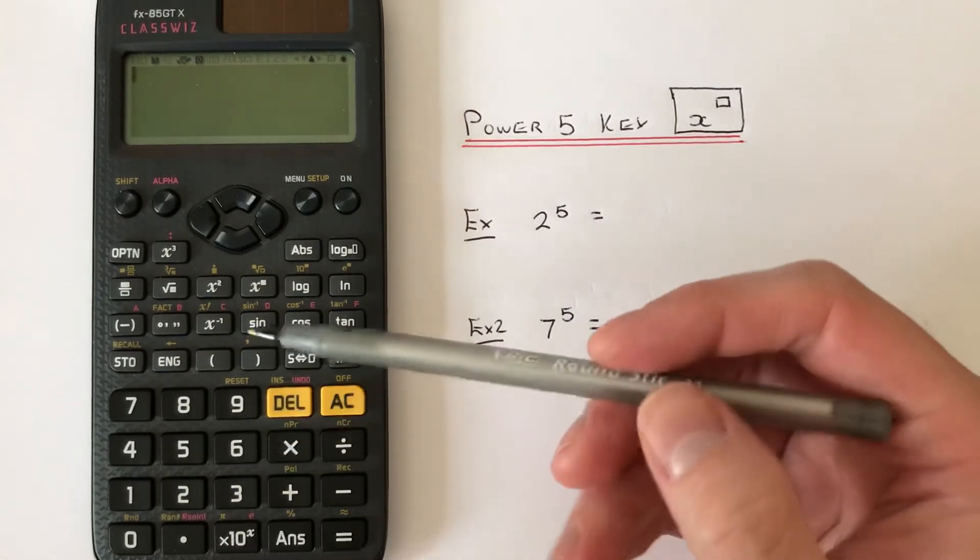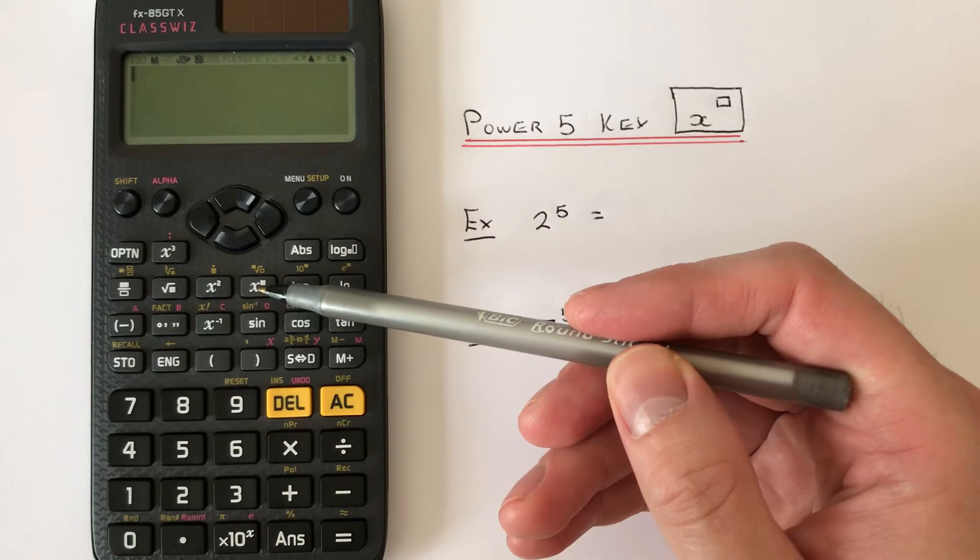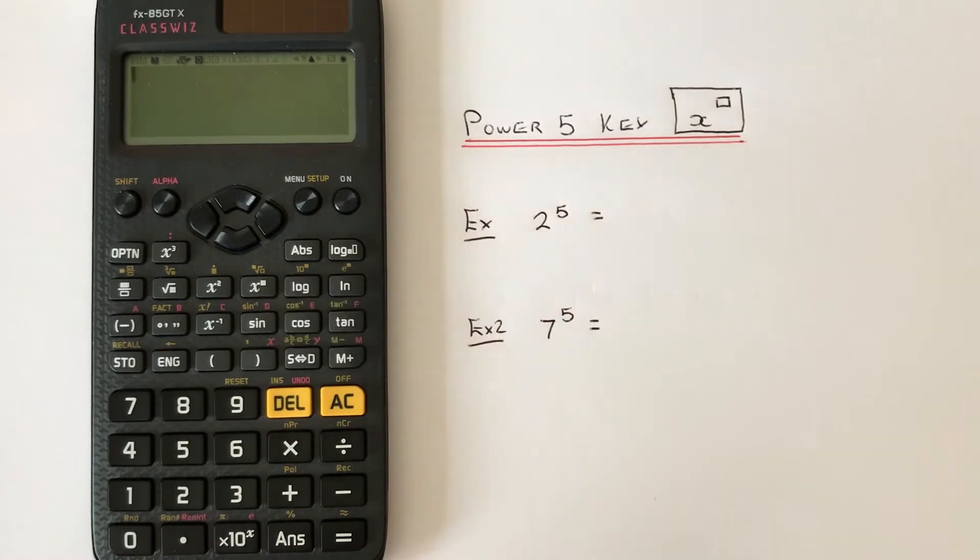To do this, we need to use the power key located on the second row of the functions. This is this key here.